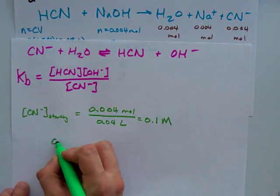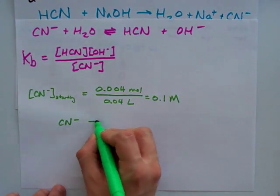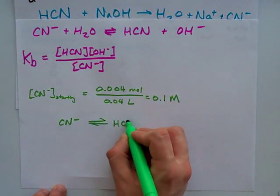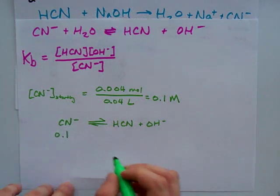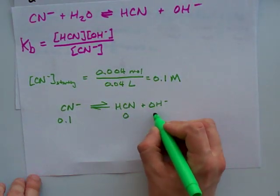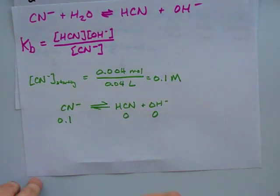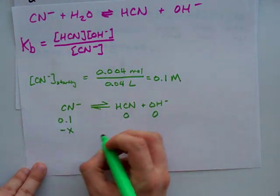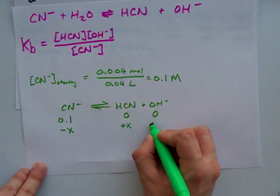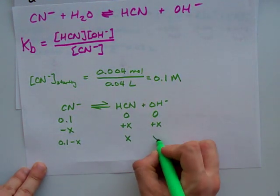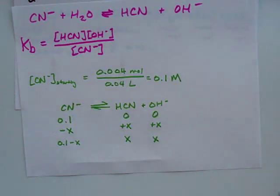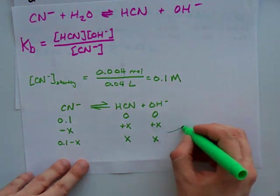Ice table-wise, CN- (I'm ignoring water again because it doesn't even play a role in equilibrium). We're starting with 0.1, we're starting with none of HCN and none of OH-. We're going to lose some amount of CN-, we're going to gain some amount of HCN and OH-. You guys know how to do ice tables. Here we go. It's these numbers that end up getting plugged back into the equilibrium expression.